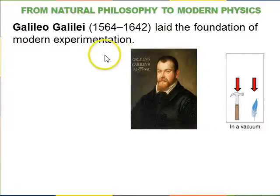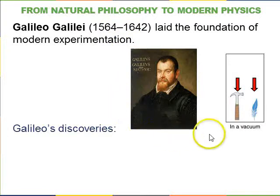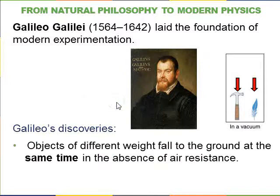So, Galileo laid the foundation for modern experimentation in the early 1600s. We'll talk a little bit later about how he rolled marbles down inclines and dropped things from the Leaning Tower of Pisa, and figured out that objects of different weight fall with the same acceleration or fall in the same amount of time in the absence of air resistance. So, if you drop a hammer, it falls faster than a feather, but if you could take away all the air in the room, so if you were in a vacuum, you would find that they both fall at the same rate.